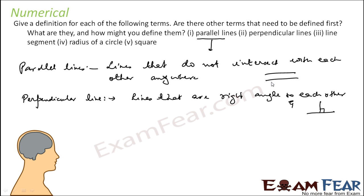These are parallel lines — they won't meet each other. This is line L and this is line M. Line segment: a line segment is a terminated line.